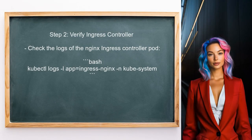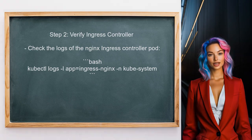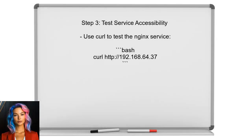Next, verify that the ingress controller is functioning properly. This can be done by checking the logs of the Nginx ingress controller pod for any errors or warnings. If the logs indicate the ingress controller is running without issues, ensure that the service is accessible by using the curl command to test the service directly.